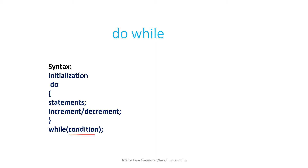In looping statements we have three parts: initialization, test condition, and increment or decrement. Here, first we have initialization, followed by 'do', then the body of the loop with statements and the increment or decrement statement, and finally we evaluate the 'while' condition. If the condition is true, the body of the loop executes again; if false, it exits. The key difference: while is an entry check loop, but do-while is an exit check loop.